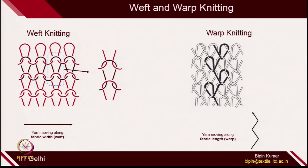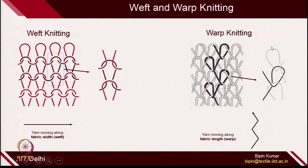You can easily visualize warp knit and weft knit structures by looking at the structure itself. In warp knit structures, the loop architecture is slightly disturbed — the loop is not standing vertical or symmetric as in weft knitting. In warp knitting, the loop is either tilted right or tilted left. The intermeshing is still there — each loop is intermeshed at the top point and bottom point — but each loop is not connected with the loops in the same course; rather, it is connected with the loops of alternating courses.